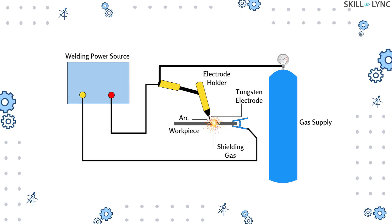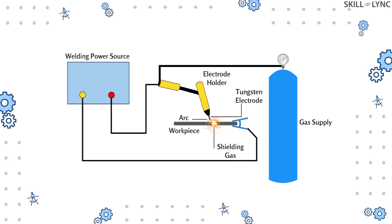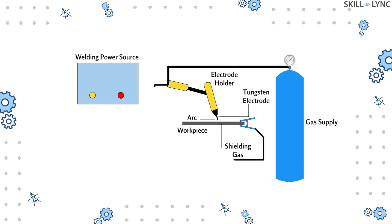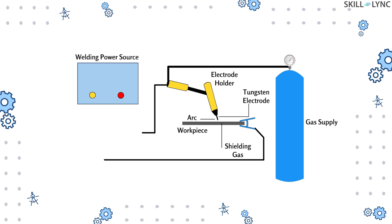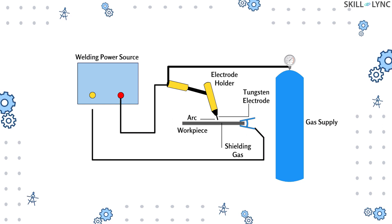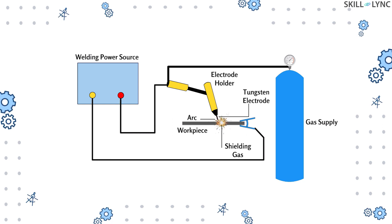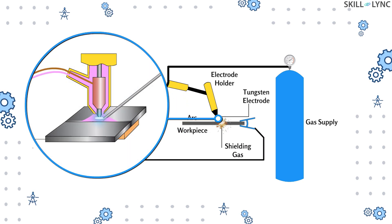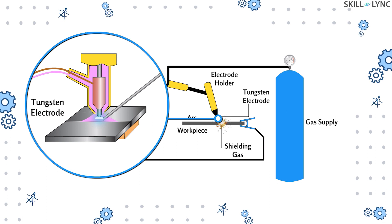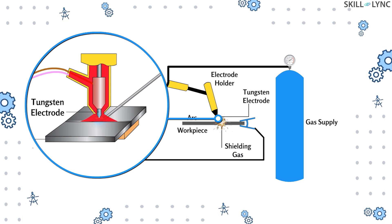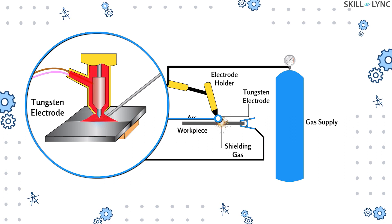We have an AC or DC power source which has provisions to vary the value of current and voltage used. One end of the power terminal is clamped to the workpiece and the other end is connected to the torch. The torch used in this process is much different from other arc welding processes, as a non-consumable tungsten electrode is connected to the power source and inert gas is pumped from a separate container through the openings.